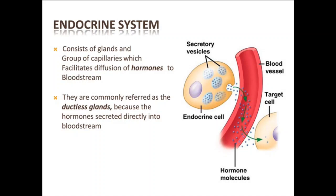These hormones are released directly into the circulatory system — the blood — because endocrine glands are ductless glands, so their secretions go directly into the circulatory system. Through this secretion, various organs of our body are regulated.